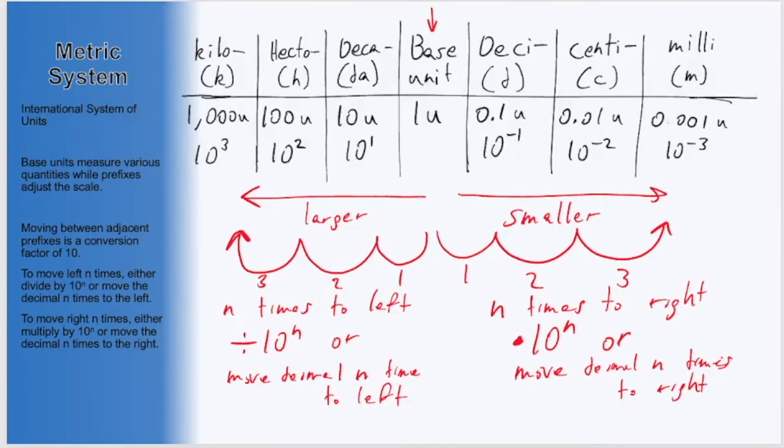or equivalently move the decimal n times to the right. The simple method of moving the decimal shows why we organize our table with the larger units on the left and the smaller units on the right. Setting up the table in this manner lets us move the decimal in the same direction we are moving across this table.